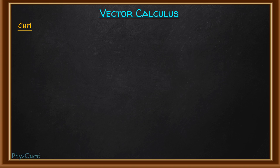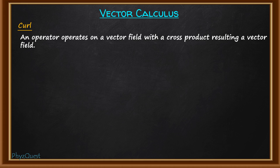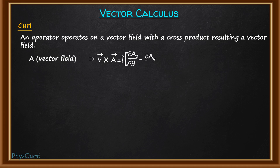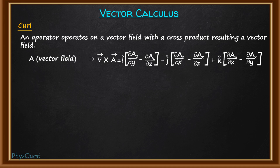Now let's talk about curl. Curl by definition is when the del operator operates on a vector field with a cross product, producing another vector field. Suppose we have a vector field A; del cross A will be equal to i-cap(∂Az/∂y − ∂Ay/∂z) − j-cap(∂Az/∂x − ∂Ax/∂z) + k-cap(∂Ay/∂x − ∂Ax/∂y). This produces a vector field using the differential operator.